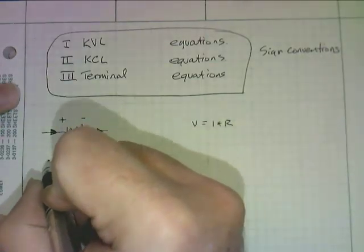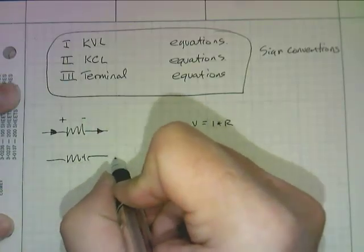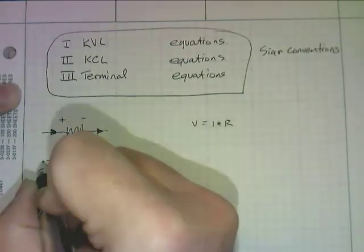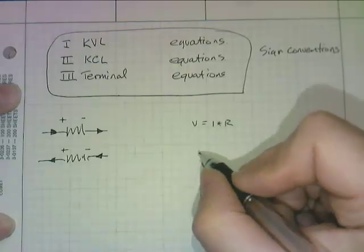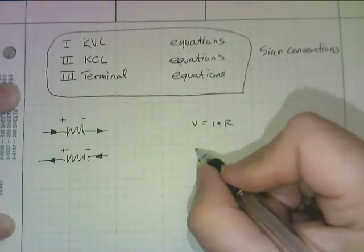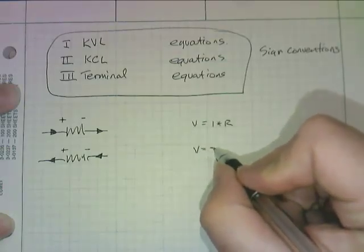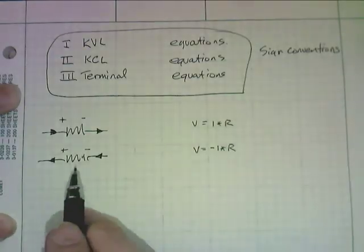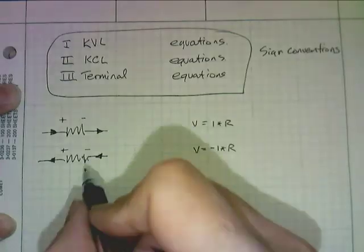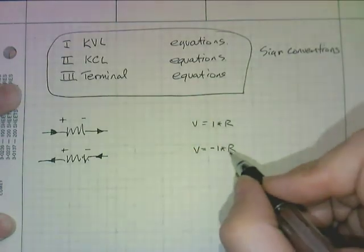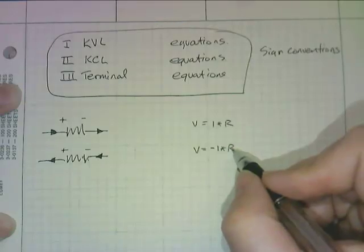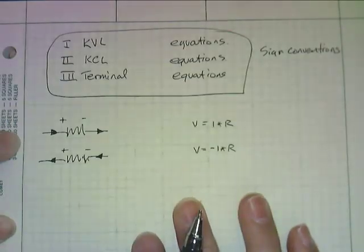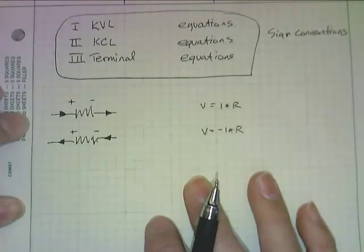If, on the other hand, we have a resistor and the voltage across is the same but the current switches direction, then we have an abnormal situation where we have to create a terminal relation which is negative I times R. This is unusual. It may occur. It's very rare that we have negative resistance, although there are some devices called tunnel diodes that do have negative resistance curves, but we're not talking about them in this class.